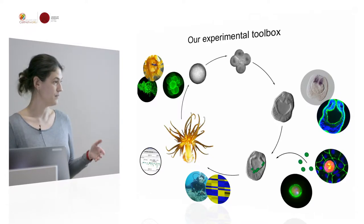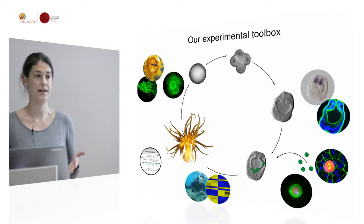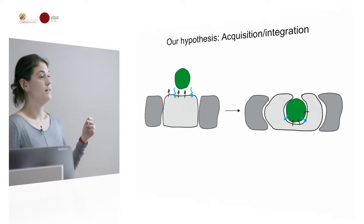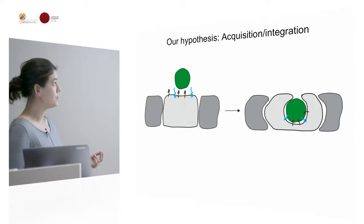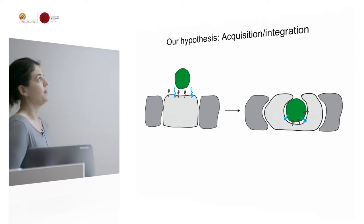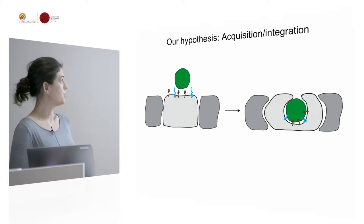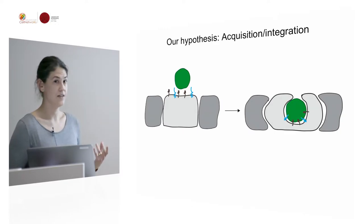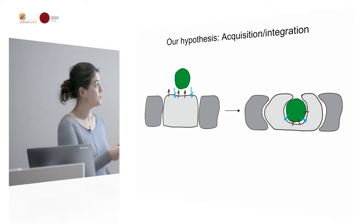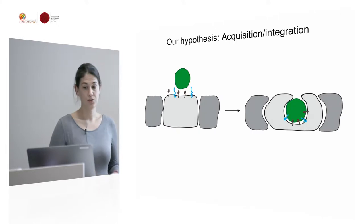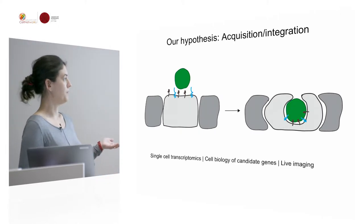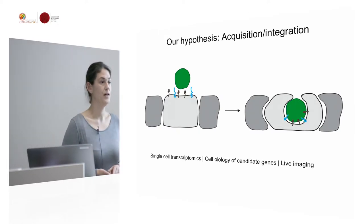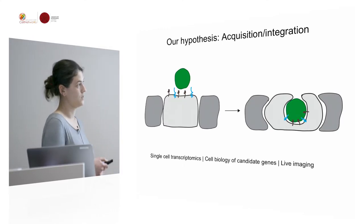For the first time, we can now start a hypothesis-driven analysis of the whole process. For example, we hypothesize that the endoderm of these larvae has special cells that acquire the symbionts via receptor-mediated phagocytosis. After integration of these symbionts, we think the cellular organization of the host cell, as well as the surrounding tissue, changes. We are going to take an unbiased approach using, for example, single-cell transcriptomics, as well as classical cell biology — analyzing the function of candidate genes and live imaging.